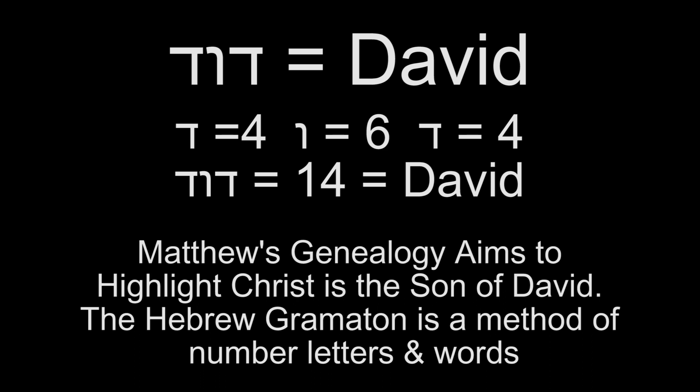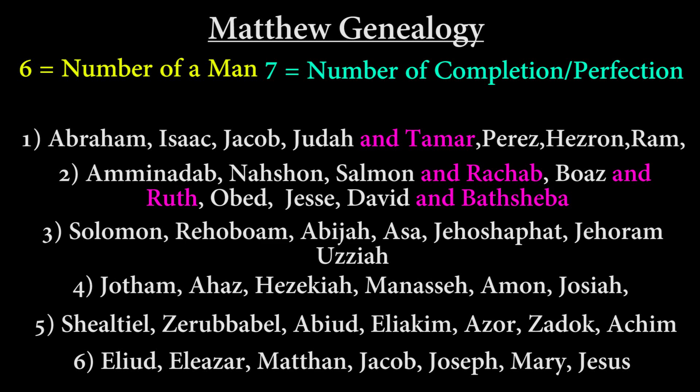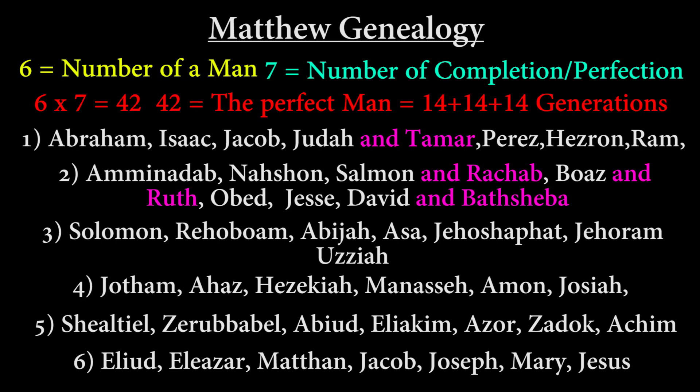I'm not a huge fan of Hebrew numerology because people use it to prove absolutely anything, but it's interesting that we can also look at it another way. Six is the number of man because man was made on the sixth day, and seven is the number of completion because God made everything in seven days. When we put the two together we find a man that is complete in all his ways — we find Jesus. Six times seven equals 42, pointing to a man who is perfect in his ways because God has made him complete.